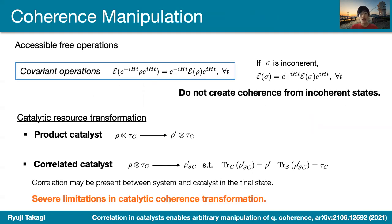To think about this, what are the accessible free operations we can use? The resource theory of asymmetry tells us that it is reasonable to think about covariant operations — operations that commute with the time translation generated by the Hamiltonian. One can convince oneself that these covariant operations are valid free operations in the sense of resource theories, because they do not create coherence from incoherent states which have no coherence.